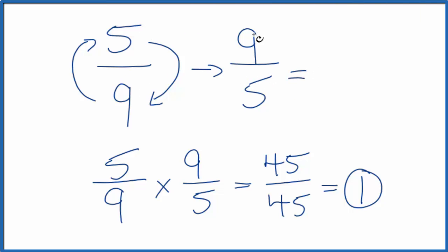You could also write this as a mixed fraction. Five goes into nine one time with four left over. So one and four fifths and nine fifths, they're equivalent. So the reciprocal of five ninths could also be considered to be one and four fifths.